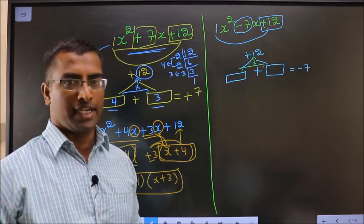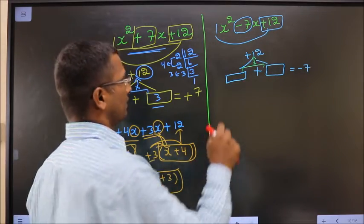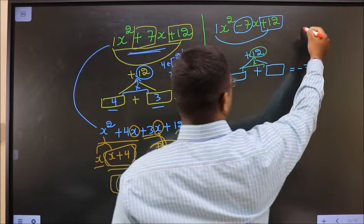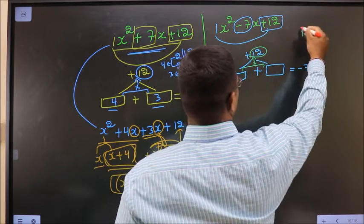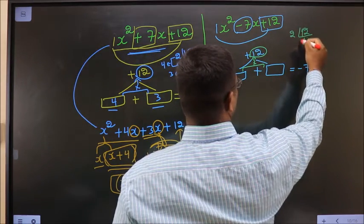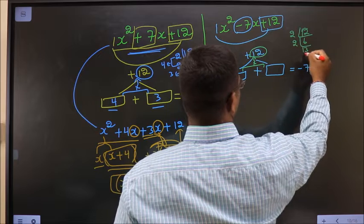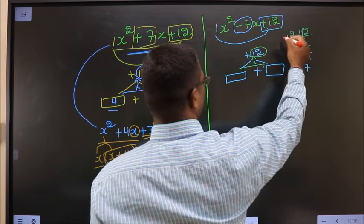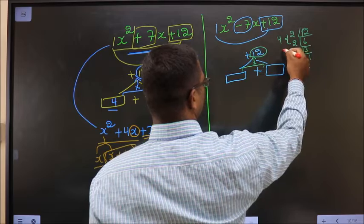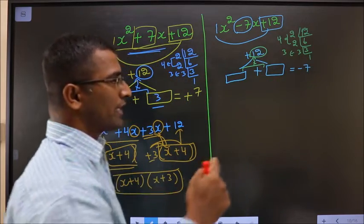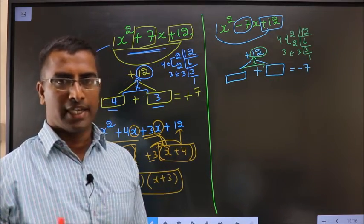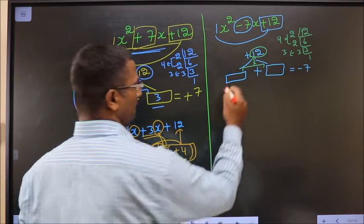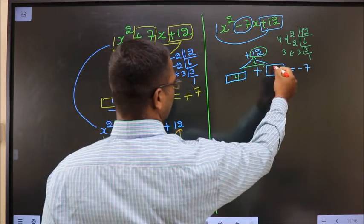How do we do that? By taking the LCM of 12. If I take LCM of 12 I get the same thing: 2, 6; 2, 3 and 3; 1. So the numbers are 2 into 2, which is 4, and 3. Four into 3 is 12, and 4 plus 3 is 7. So the numbers are 4 and 3.